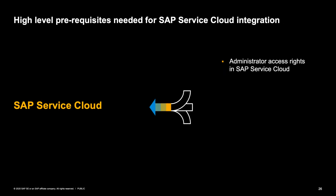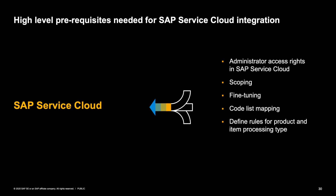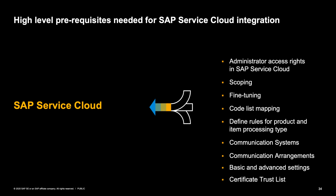For SAP Service Cloud, we will need administrator access rights. We need to define some scoping around communication and information exchange, including ticket integration with SAP Field Service Management. We also need to maintain some fine-tuning activities like ticket for customer support and code list mapping for integration with external applications and solutions, define rules for product and item processing type, define communication system and communication arrangements, do some basic and advanced settings, and upload the Certificate Trust List in SAP Service Cloud.